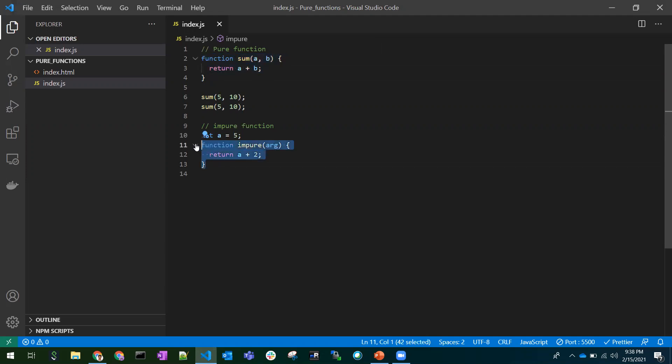Why does this function become an impure function? Because this function is using an outside world variable. Here, 'a' is a variable which was defined outside the scope. It is trying to use or manipulate or modify that value.